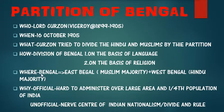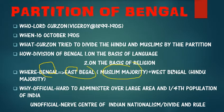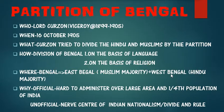Where did this partition take place? Obviously in Bengal. Under this, Bengal was divided into East Bengal with a Muslim majority and West Bengal with a Hindu majority. You need to remember where the Hindu majority and Muslim majority were, and that Bengal was divided into East Bengal and West Bengal.